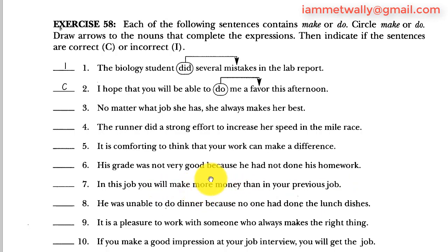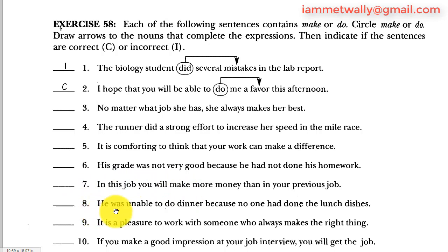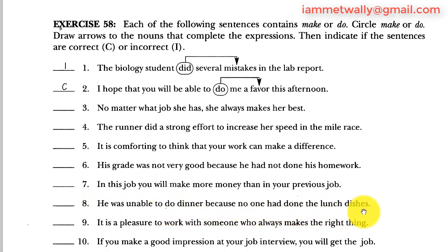Sentence seven: in this job you will make more money than in your previous job. 'To make money' is correct — it's not 'to do' money, because it's not a performance. It's also an idiomatic expression, so sentence seven is correct.